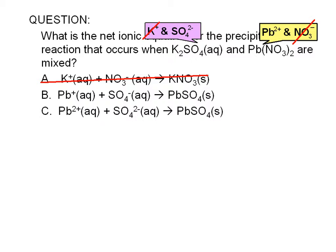Choice B is obviously wrong. The charge of lead 2 ion is positive 2, not positive 1. And the charge of sulfate ion is negative 2, not negative 1.